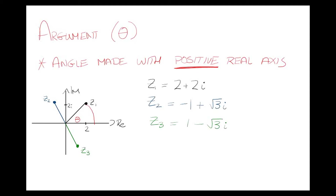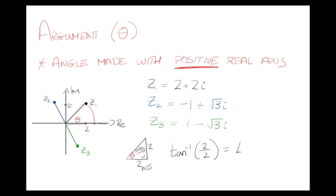Theta is the angle made with the positive real axis — we go anticlockwise. I like to think of this as a right-angle triangle. For z1, the triangle has a horizontal distance of 2 and a vertical distance of 2 — I'm forgetting about the i, just looking for the angle. The opposite side is 2 and the adjacent side is 2.